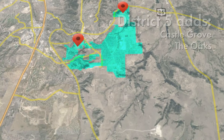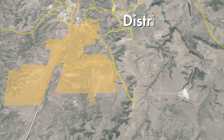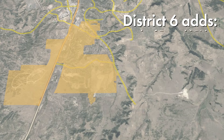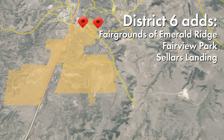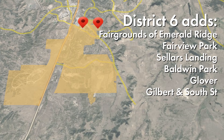District 6 in Southern Castle Rock will now include voters who were in District 4. Those voters live in the fairgrounds areas of Emerald Ridge, Fairview Park, and Sellers Landing. Some voters living in Baldwin Park, Glover, and areas near Gilbert and South Streets are also in District 6.